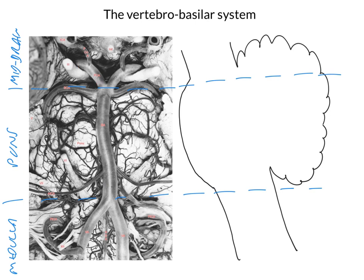What we're going to do now is draw these onto the lateral view and illustrate how they supply the cerebellum, but more importantly, we're going to show how they supply the brainstem en passant, as it were. So these vessels supply the cerebellum, but they also supply the brainstem in their proximal territories.